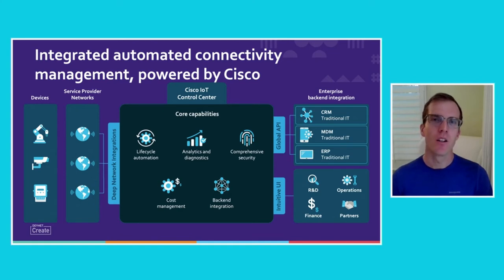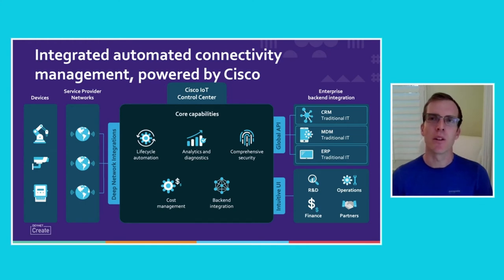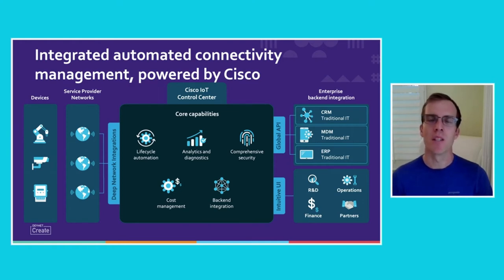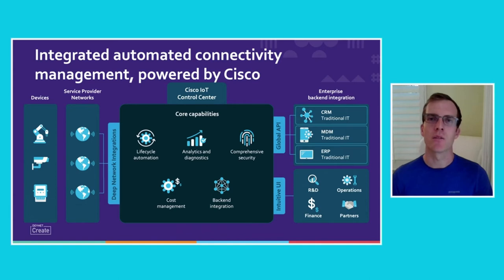On the cost management front, we allow you to monitor your costs — things like usage and the costs derived from your core rate plans — as well as manage those rate plans themselves, so that you're not caught with huge overages and can reduce your connectivity costs. We can also use our APIs for back-end integration with your core IT systems — things like your CRM, your MDM, and your ERP. This means you can scalably grow your business using our APIs and leverage data from other platforms like SAP, Salesforce, and more.